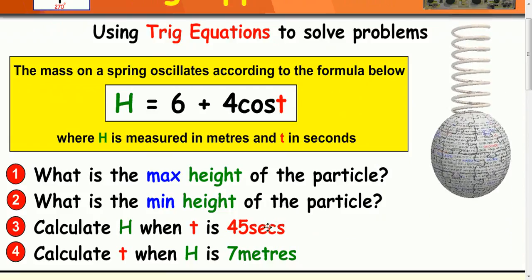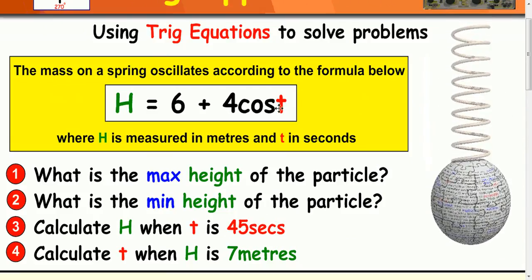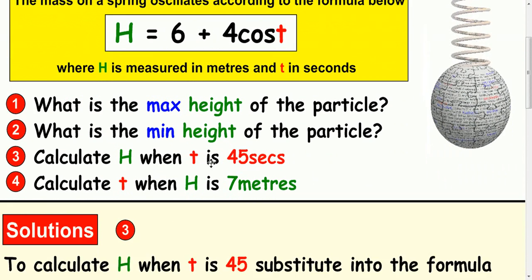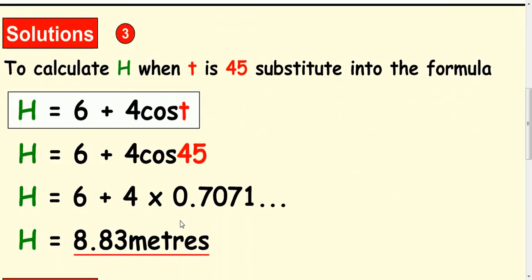For question 3, calculate h when t is 45. Well, you substitute 45 in here and then work it out. So it becomes 6 plus 4 times the cos of 45, and at intermediate 2 or national 5, you would be able to calculate it for this and you multiply it out and it would come to 6 plus 4 times 0.7071 and 8.83.